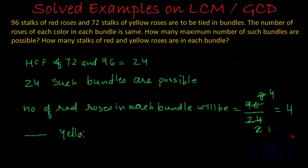And the number of yellow roses in each bundle will be 72 divided by 24, and we know it divides it 3 times. So the number of yellow roses in each bundle will be 3, and the number of red roses in each bundle will be 4, and the total maximum possible such bundles will be 24.